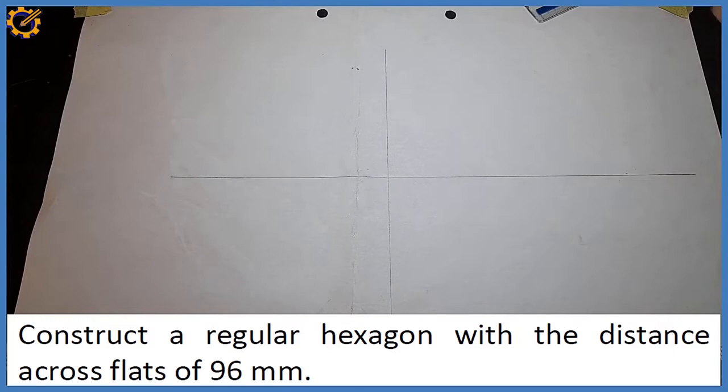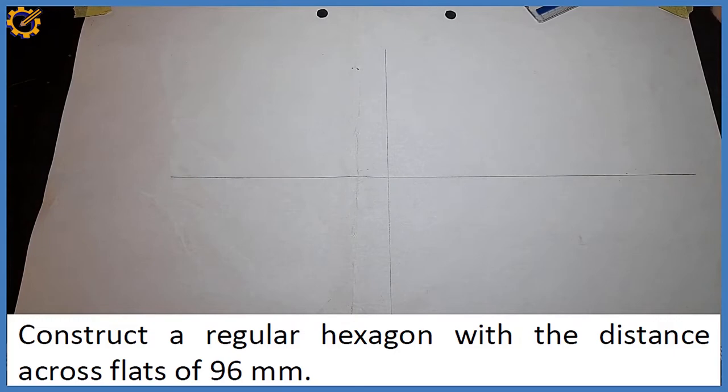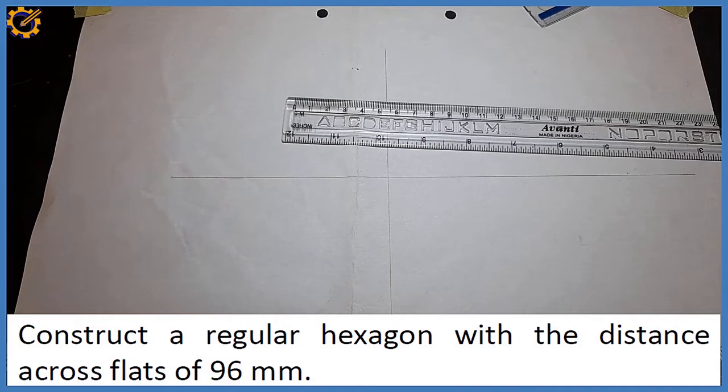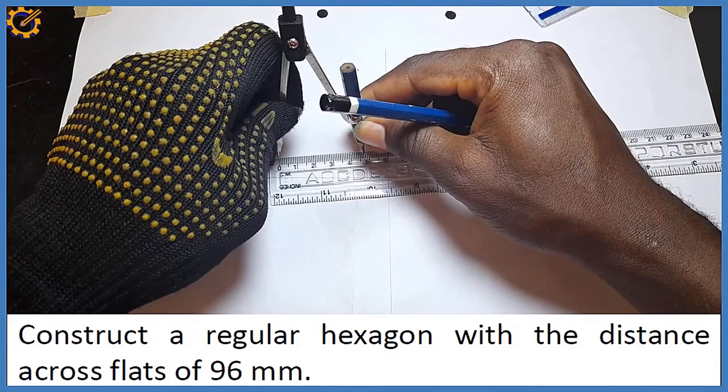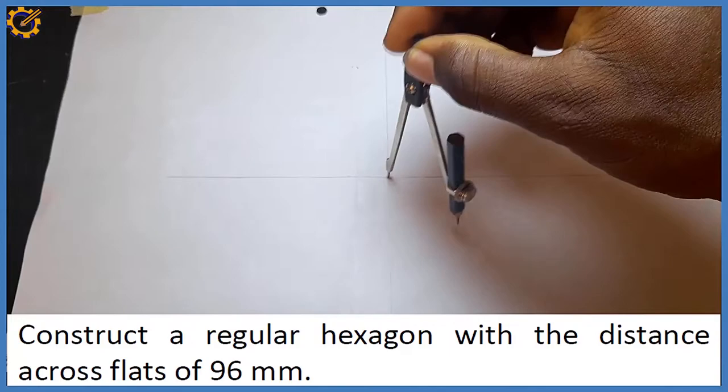What is the next procedure? The next procedure is to produce a circle of diameter 96, so the radius is going to be 48. With my compass, I measure radius of 48, and with radius 48 at that center of intersection, I produce my circle.